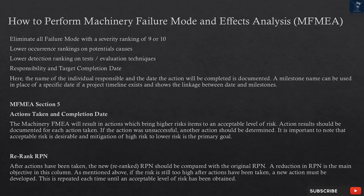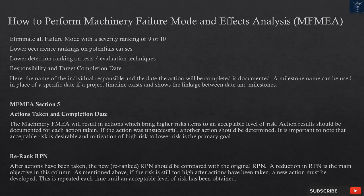The Machinery FMEA will result in actions which bring higher risk items to an acceptable level of risk. Action results should be documented for each action taken; if the action was unsuccessful, another action should be determined. It is important to note that acceptable risk is desirable and mitigation of high risk to lower risk is the primary goal. After actions have been taken, the new re-ranked RPN should be compared with the original RPN. A reduction in RPN is the main objective. If the risk is still too high after actions have been taken, a new action must be developed. This is repeated each time until an acceptable level of risk has been obtained.